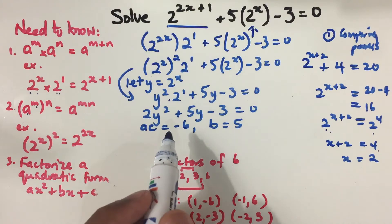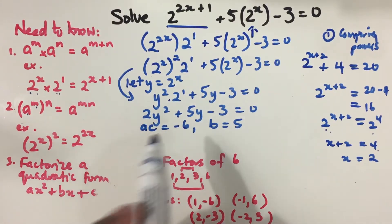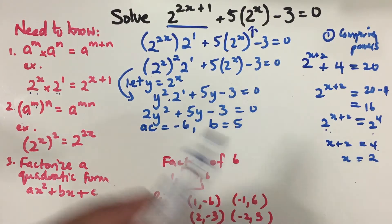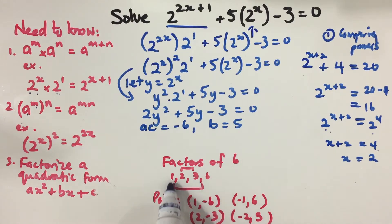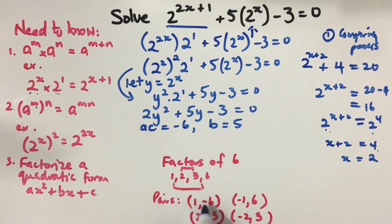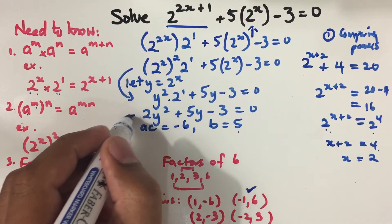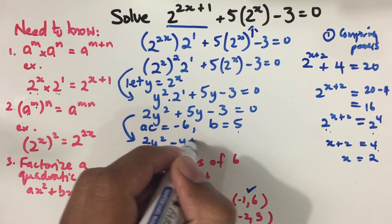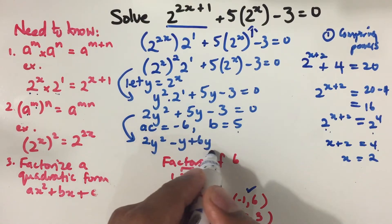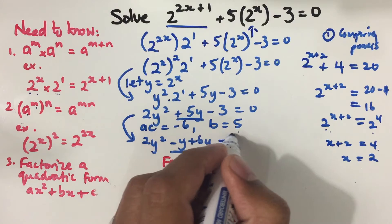To factorize, we need a times c equals 2 times negative 3 equals negative 6, and b equals positive 5. We need two numbers that multiply to give negative 6 and add to give positive 5. Writing out factor pairs of 6: negative 1 times 6 gives negative 6, and negative 1 plus 6 equals positive 5, so those are our numbers. We rewrite 2y squared plus 5y minus 3 as 2y squared minus y plus 6y minus 3 equals 0.